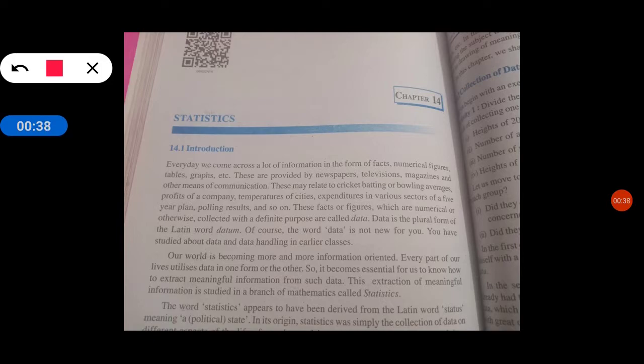Where are we provided? We get through the newspaper, television, magazines, other means of communication. Maybe we get to know at someone's door. These are related to cricket batting or bowling average, profit of a company, temperature of cities, expenditure in various sectors of a five-year plan, polling result and so on.